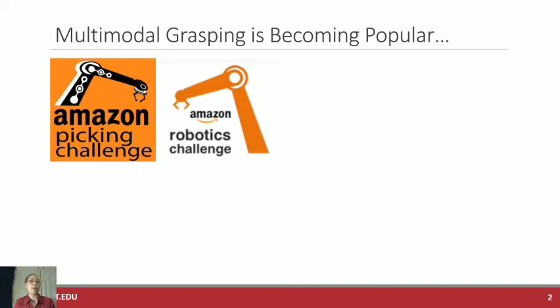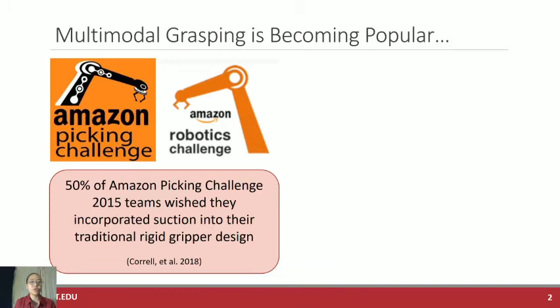This idea of multimodal grasping, that it's not just one grasping motif that you should use in order to pick up an object, is becoming steadily more popular in the robotics community. We can really see this if we look at the results of the Amazon Picking and Amazon Robotics Challenge. After the first Amazon Picking Challenge, 50% of teams surveyed wished that they had incorporated suction instead of just doing a traditional rigid gripper design. If we look at the winners of the Picking and Robotics Challenge, we see this trend sort of continue.